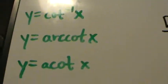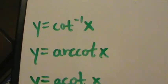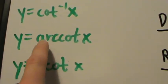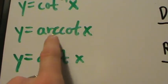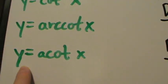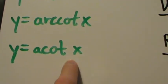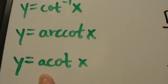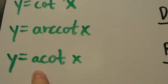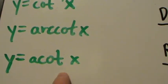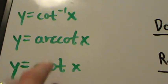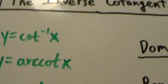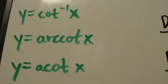Just some notation: the inverse cotangent function is denoted as cotangent inverse of x, or arc cot of x, or for short, acot of x. The acot notation isn't as common as it used to be, but it's totally correct and people will know what you mean. These are three different ways of saying exactly the same thing — they all mean the inverse cotangent of x.